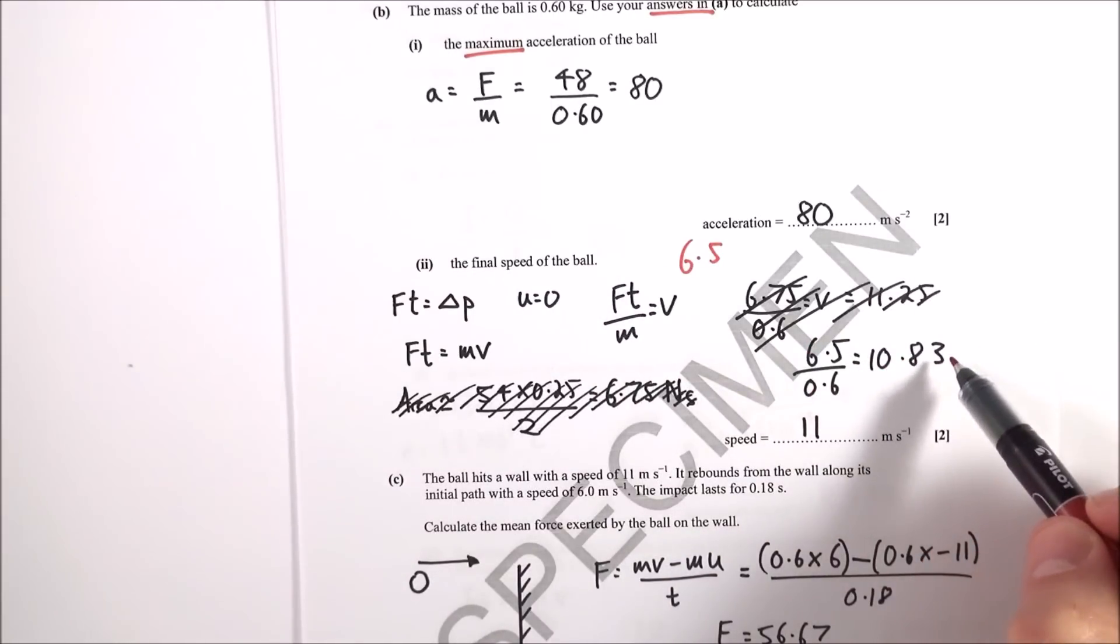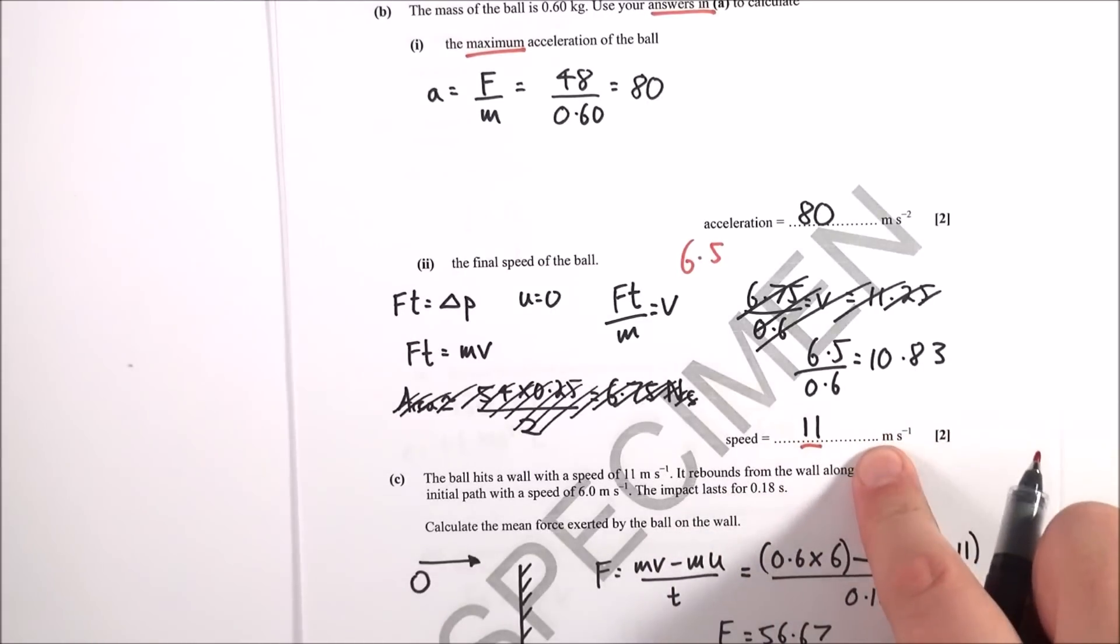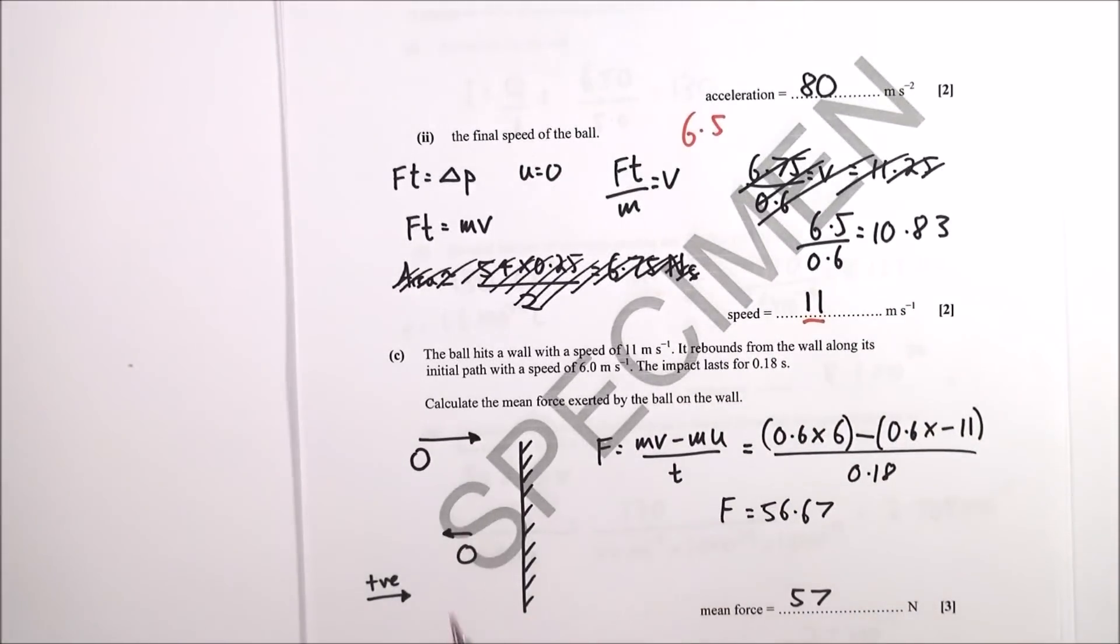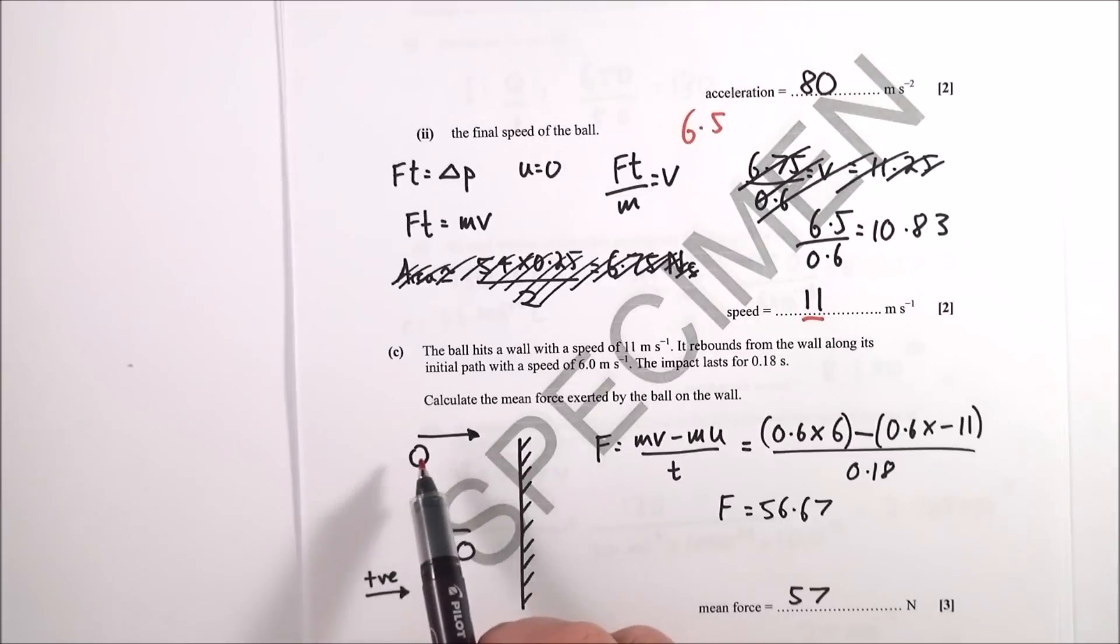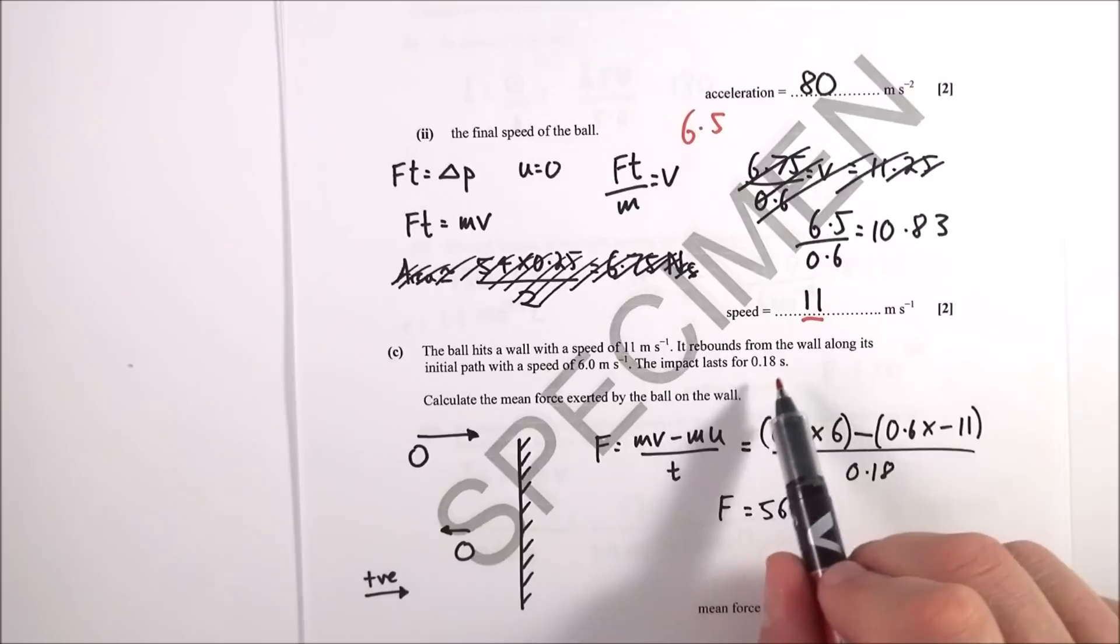Finally, part C. This type comes up so many times - a ball hitting a wall or tennis racket and rebounding. It comes in with a speed of 11 meters per second and rebounds with a speed of 6 meters per second. The impact lasts 0.18 of a second. Calculate the mean force exerted by the ball on the wall.